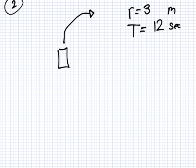Radius is three meters. The time? Why am I saying the time is 12 seconds if I said in the question it's three seconds? Because in the question it's only a quarter of a circle.